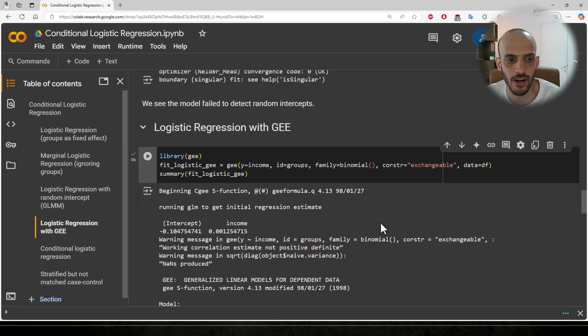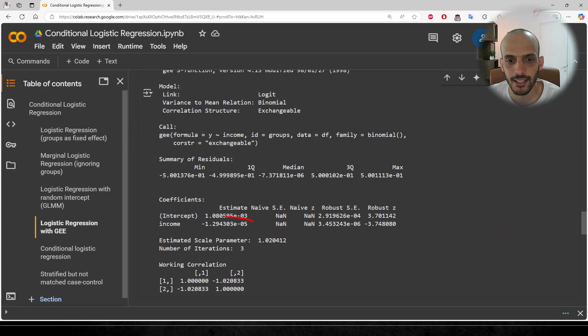After that, we move to the GEE model. Again, we receive warnings. The estimated correlation matrix is not positive definite, meaning it's not a valid correlation matrix. We also see a lot of NANs produced and the estimate is negative. And indeed, this is not a valid correlation matrix, as you cannot have a correlation larger than 1.